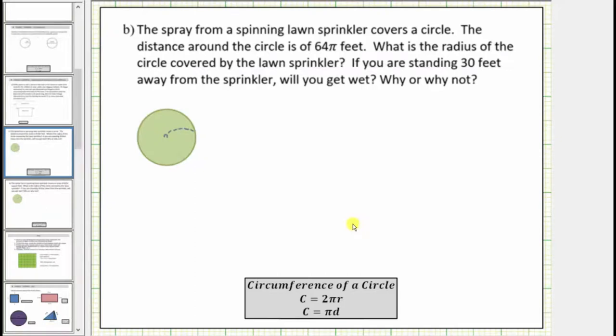Now we will solve an application problem involving the circumference of a circle. The spray from a spinning lawn sprinkler covers a circle. The distance around the circle is 64π feet.